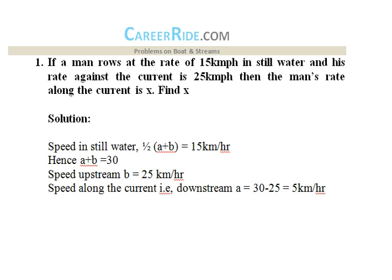We have tried to cover five different kinds of problems, and after solving these problems we hope that you would be in a position to attempt any question from this topic. First question: if a man rows at the rate of 15 kilometers per hour in still water and his rate against the current is 25 kilometers per hour, then the man's rate along the current is x — find x. We need to focus on the formula to be used. The speed in still water is given as 15 km/h, and the formula for speed in still water is 1/2 × (a + b).